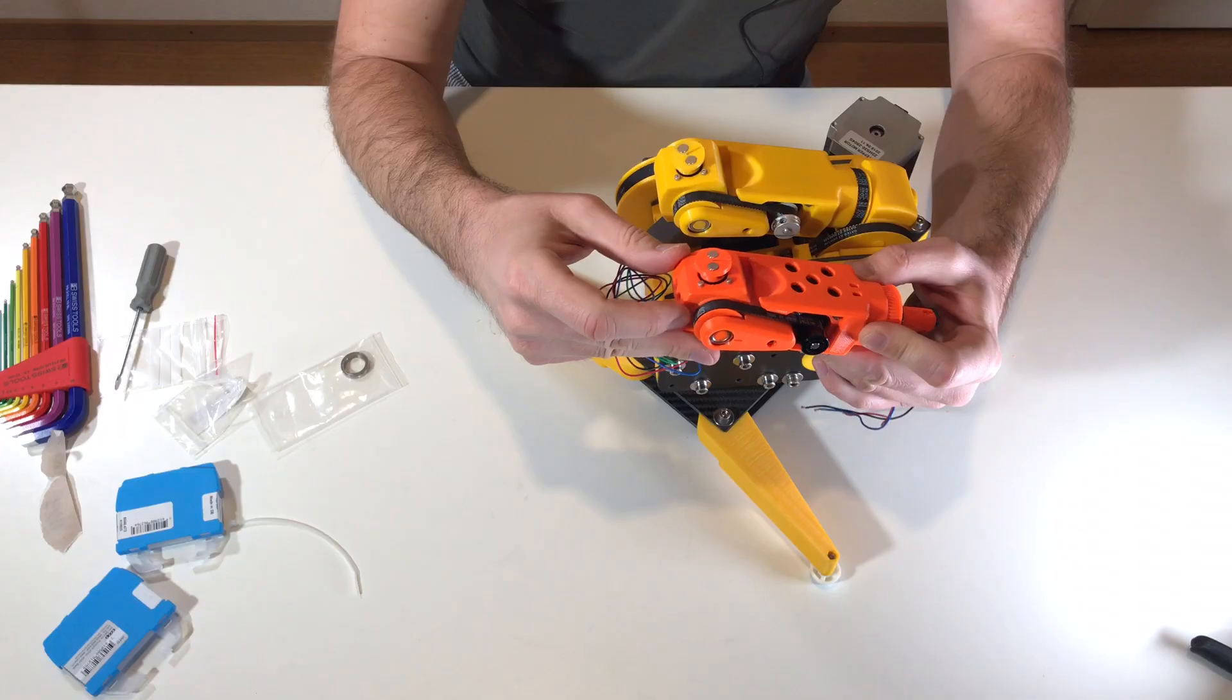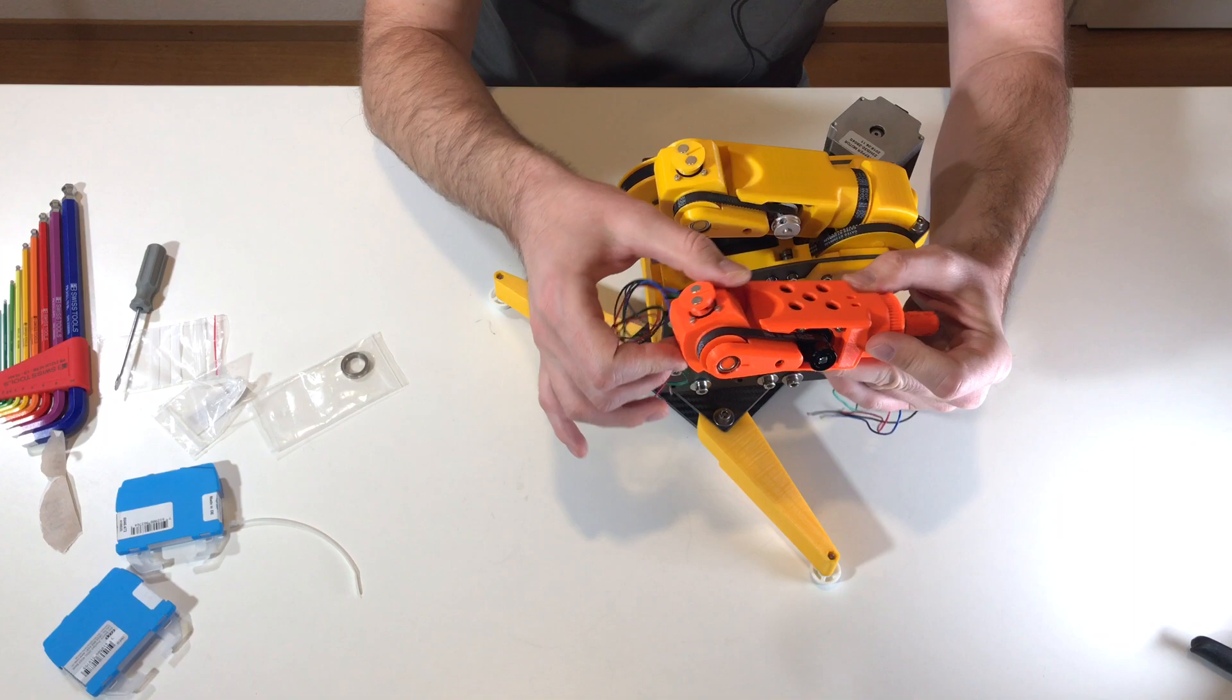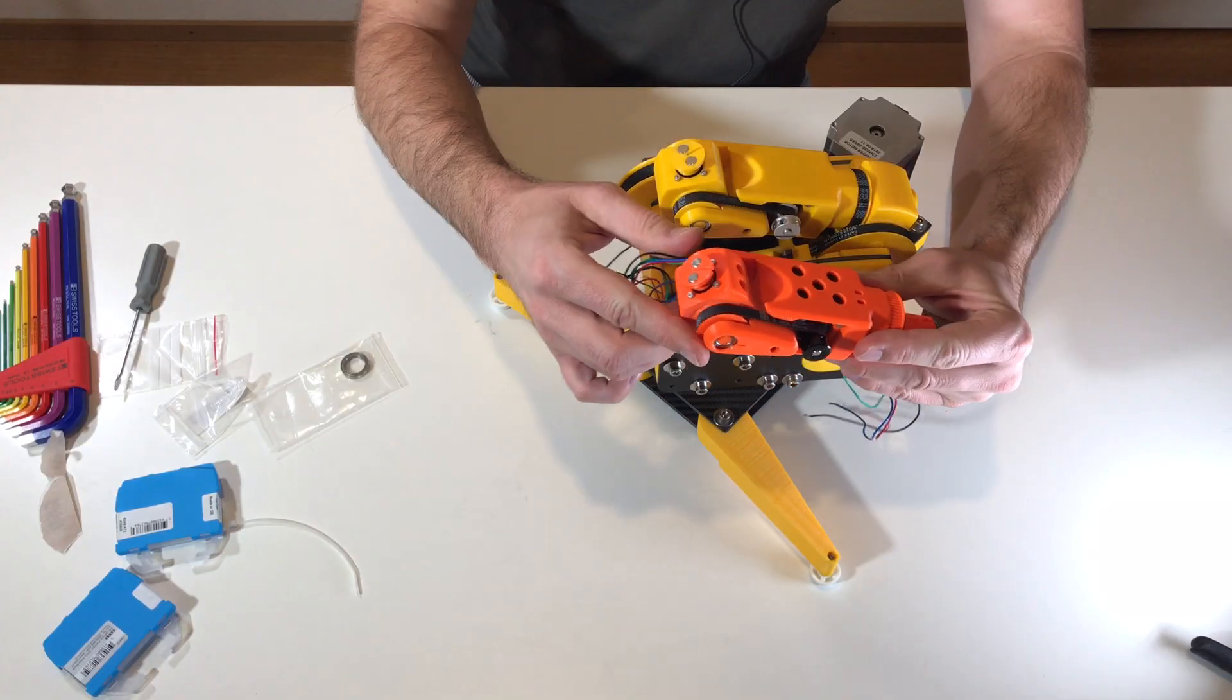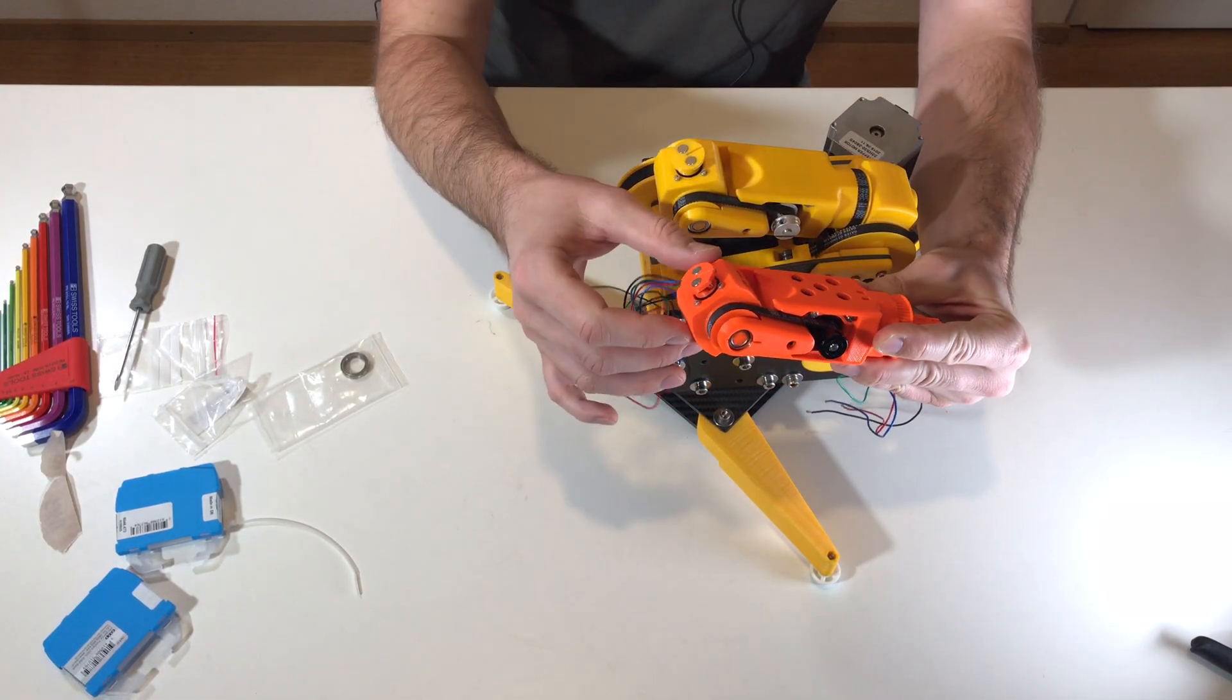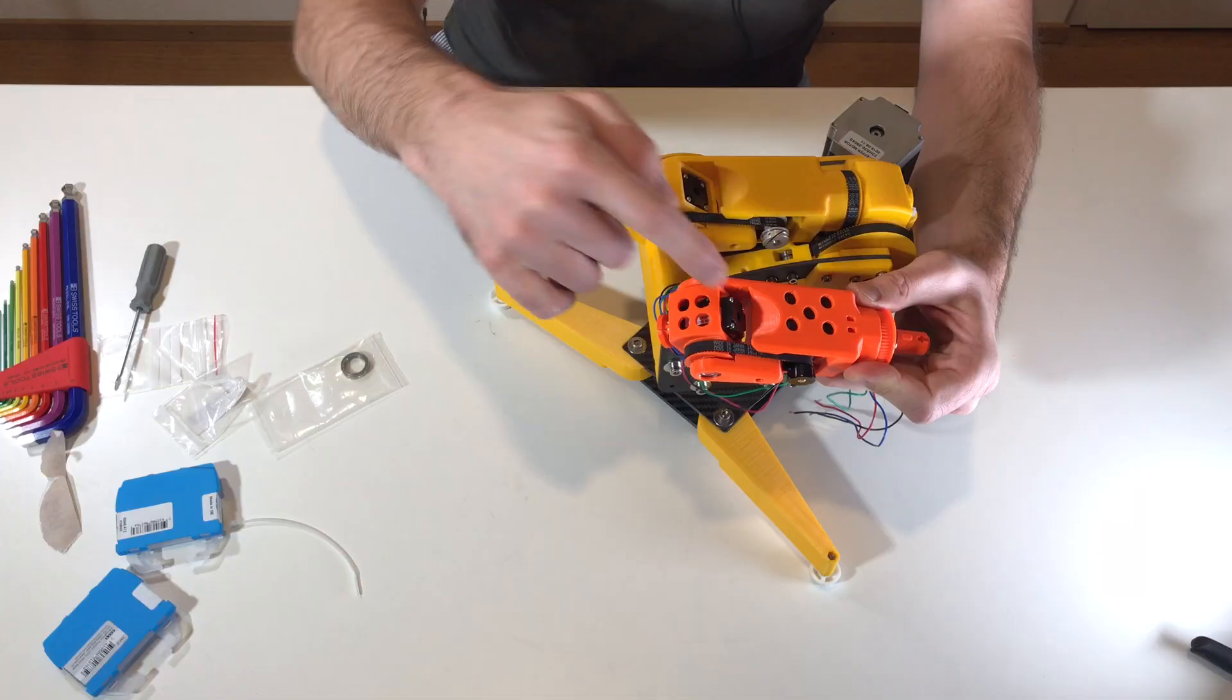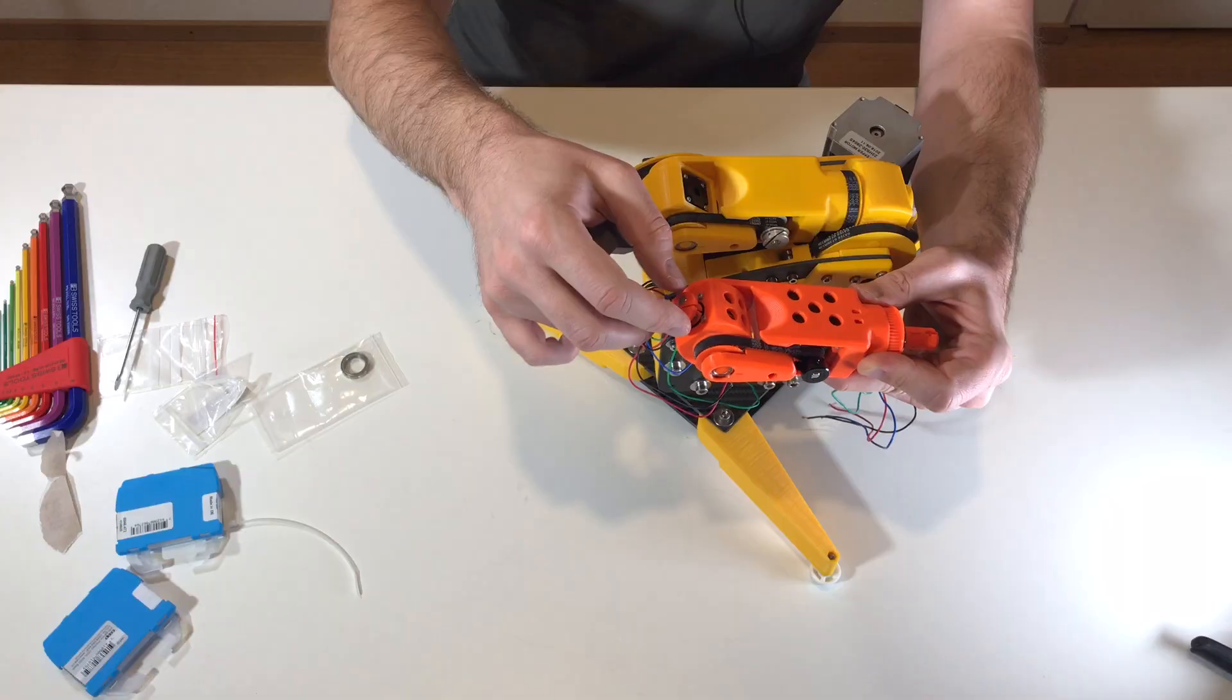And maybe just one last bit that we can put this bearing over here. And now you can see them both together. So this is the current version or new version and this is the old version. And I'm really satisfied with the way how it moves. It's super smoothly. And the rest of the robot we gonna assemble in the next videos. And by the way you can also see that now I'm using a longer motor than this one in order to have more torque on the sixth axis.